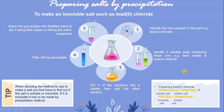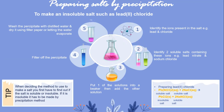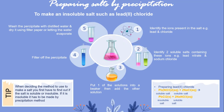Preparing salt by precipitation — to make an insoluble salt such as lead chloride. Step 1: identify the ions present in the salt, for example lead ions and chloride ions. Step 2: identify two soluble salts containing these ions — lead nitrate and sodium chloride.